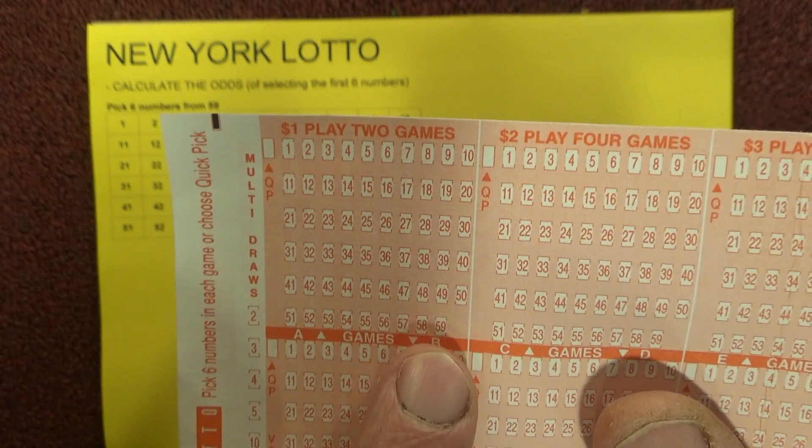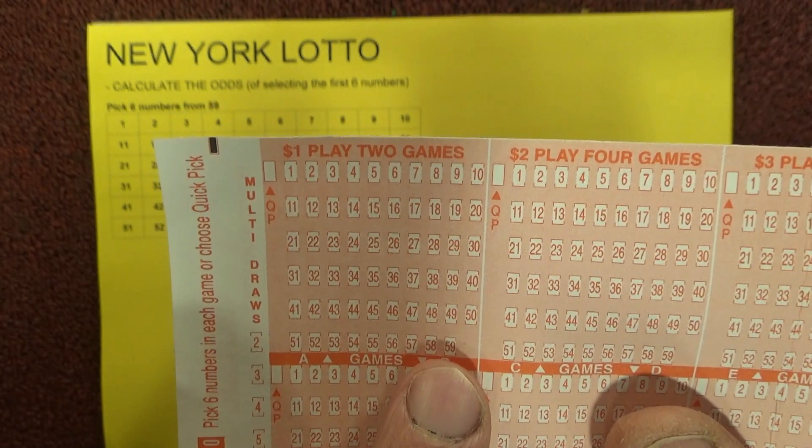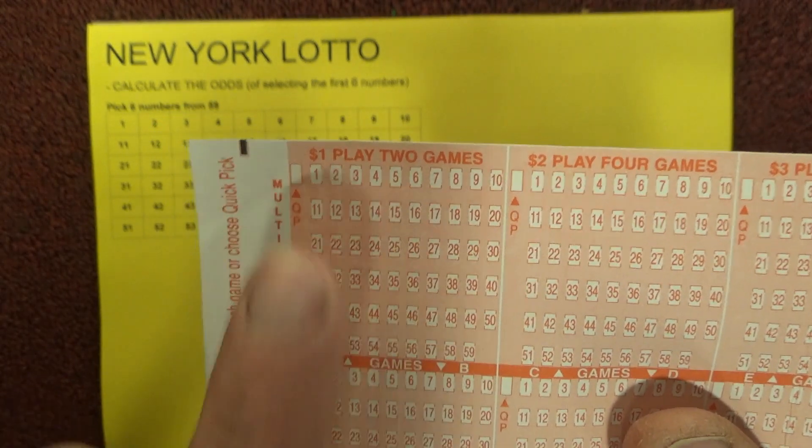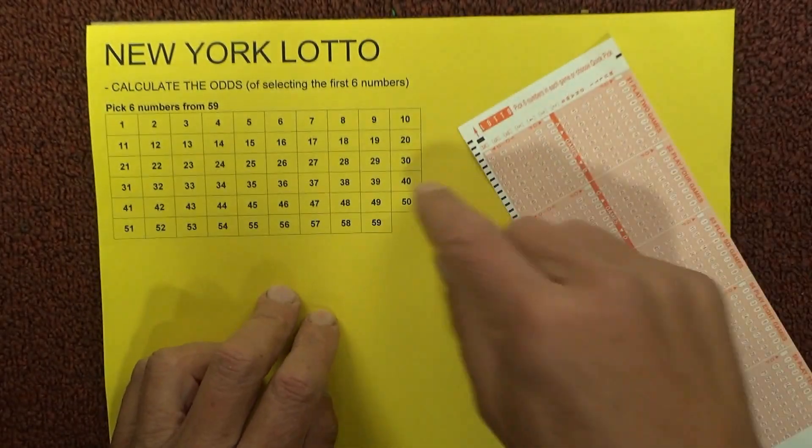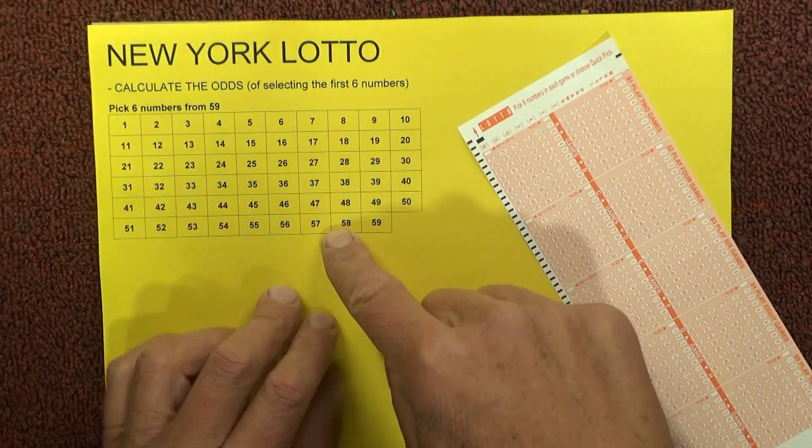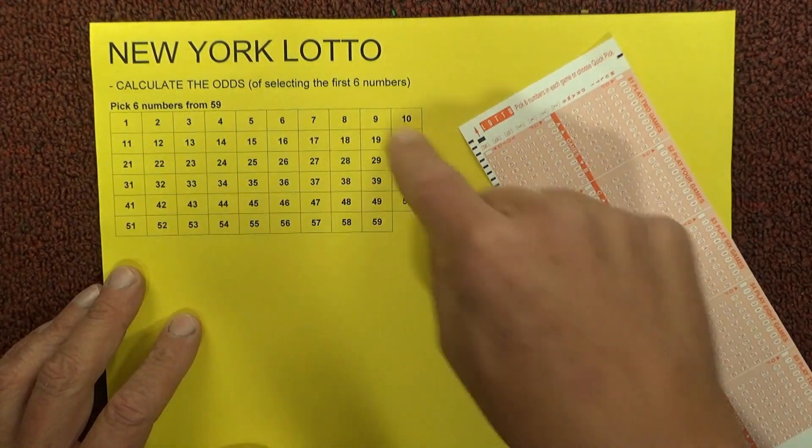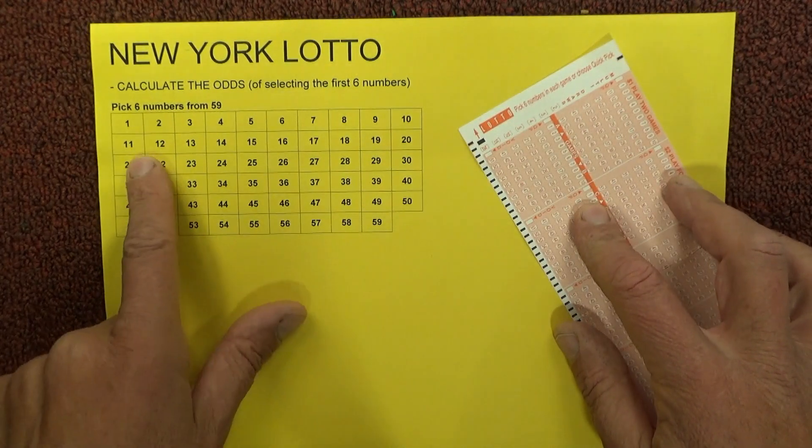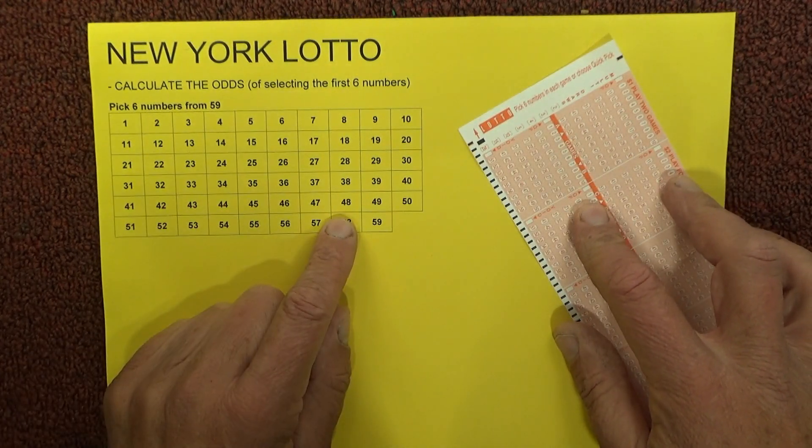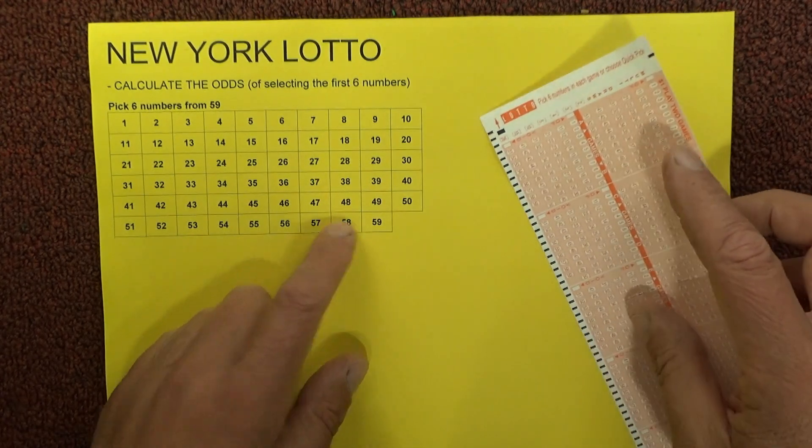You can see it's got numbers to select from 1 to 59. You've got to select six of those on a standard coupon. What I've done here on this paper is I've created a template of this Lotto coupon, and hopefully that'll help you understand how these odds are calculated.